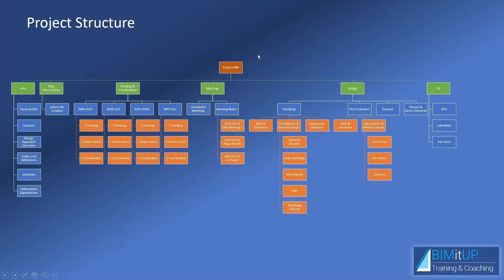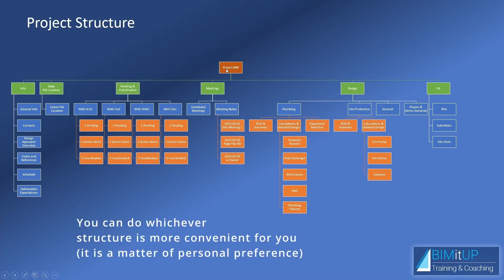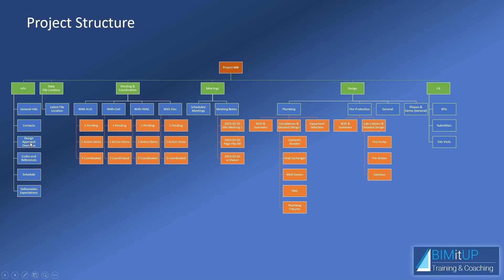Every project is different, but there are similarities. In my typical project structure — which you can tweak for your specific needs — you have a project number with general information, contacts, design approach, codes and references under which you'll design, and a schedule. You'll have deliverable expectations: schematic design, design development, 50% construction documents, etc. Then coordination grouped by discipline — fire protection, plumbing, architect, and so on — listed chronologically.